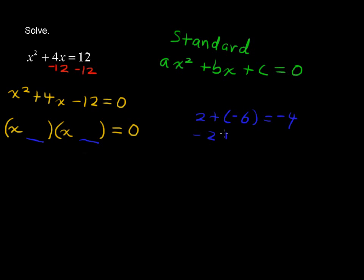But negative 2 plus 6. That works. Negative 2 plus 6 does equal positive 4. So that fits our criteria here. Negative 2 times 6 equals negative 12, and negative 2 plus 6 equals positive 4. So let's write those in there: minus 2 and positive 6.